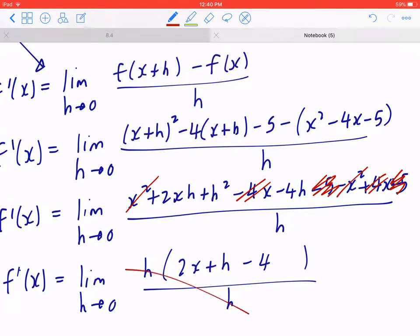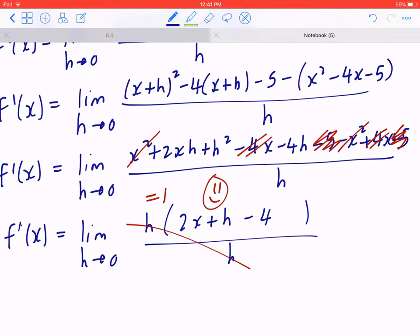The fact that you can cross out h divided by h is an indicator that you're doing it right. Back to step 1, you plug in h to be 0, which means the general slope is going to be 2x minus 4.